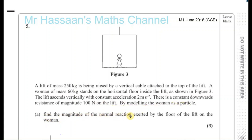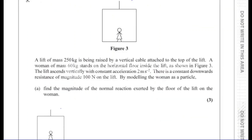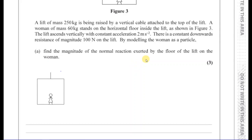By modeling the woman as a particle, find the magnitude of the normal reaction exerted by the floor of the lift on the woman. For part A, we're only considering the woman and the floor of the lift. I don't need to consider the tension in the cable, the mass or weight of the lift, or the resistance on the lift — all of that is taken into account in the reaction force. We have the reaction force of the floor of the lift on the woman, and we also have the weight of the woman.